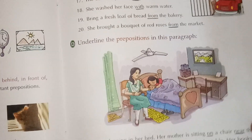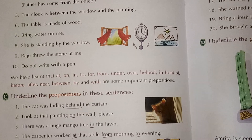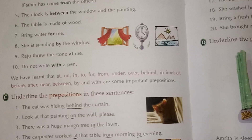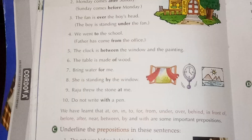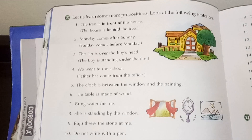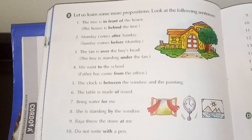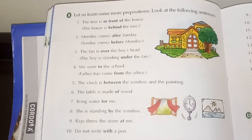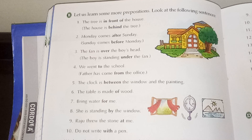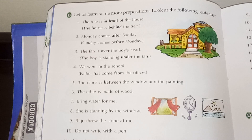Now we come to the next page. The tree is in front of the house — in front of means aage. And the house is behind the tree — tree ke peeche. In front of means aage, behind means peeche.